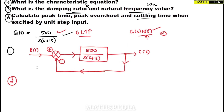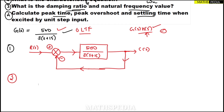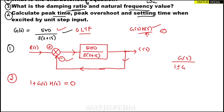For the second part, they are asking for the characteristic equation. Always remember: the characteristic equation is 1 plus G(s)·H(s) equal to zero. We use plus here because a minus sign is already sitting at the summing point. The characteristic equation comes from equating the denominator of the closed loop transfer function G(s) / [1 ± G(s)·H(s)] to zero.